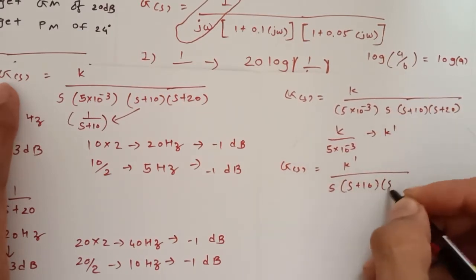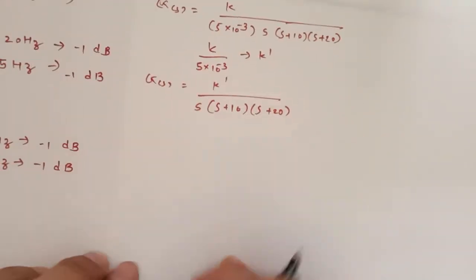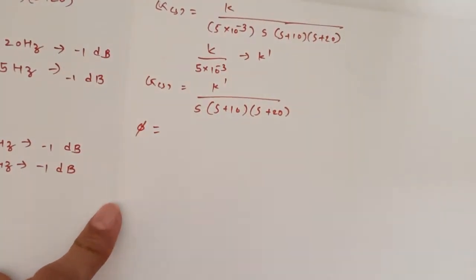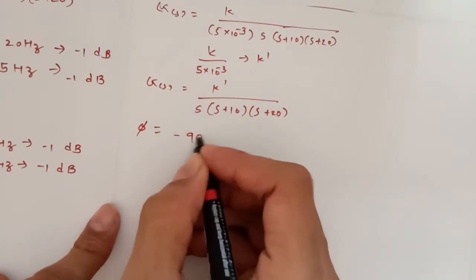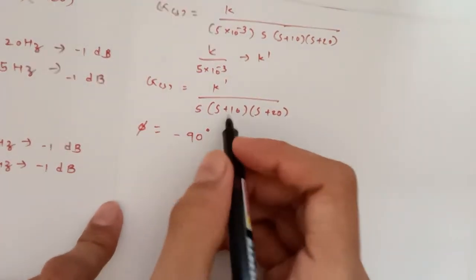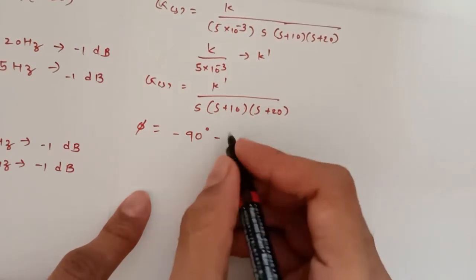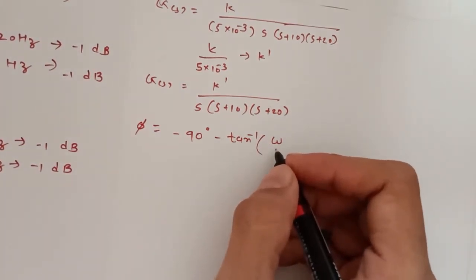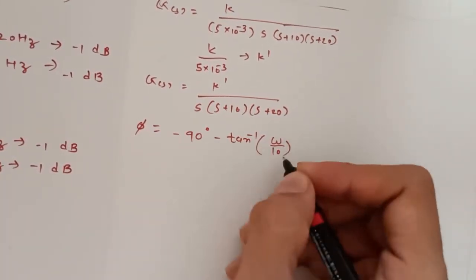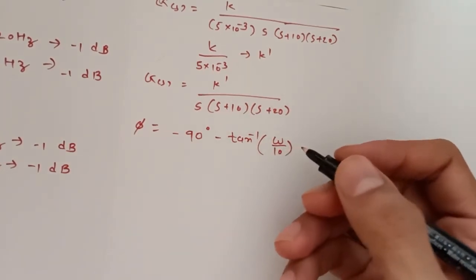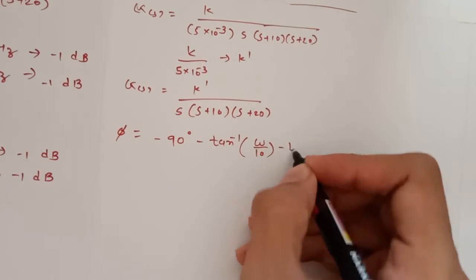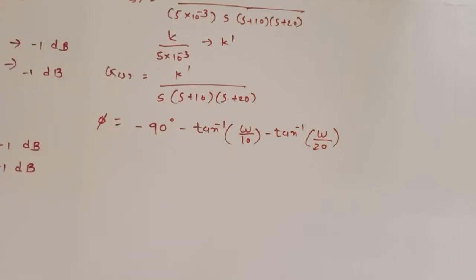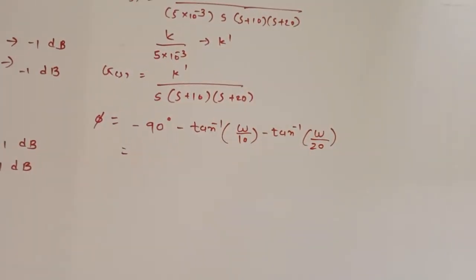Now for phase equation, phi is equal to, due to this s, it means pole at origin, we get minus 90 degrees. Another, this s+10, I will get minus tan inverse omega by 10. And for another I am able to get minus tan inverse omega divided by 20.